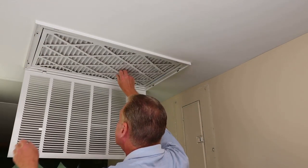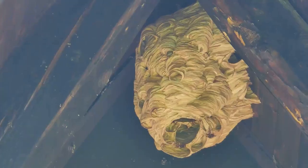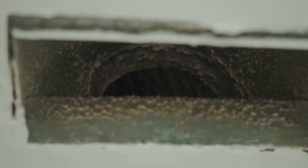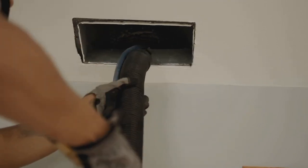Vent cleaners have seen it all. They encounter bizarre and unexpected items in dryer vents. Some common findings include lost socks, loose change, and even children's toys. But the strangeness doesn't stop there. Vent cleaners have discovered dead birds, nests, and even snakes. These unusual discoveries highlight the importance of regular inspections. You never know what might be lurking in your vent.